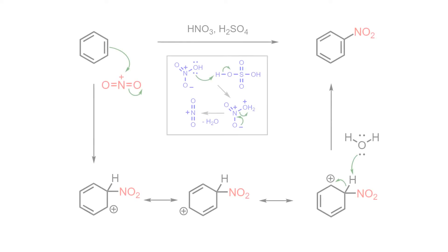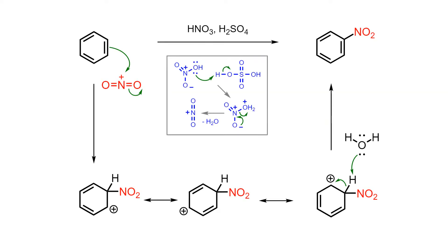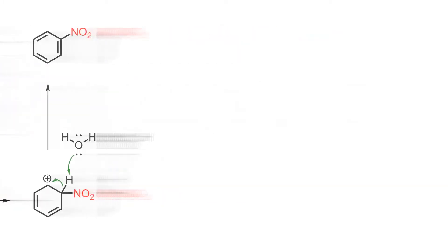The mechanism begins with nitric acid and sulfuric acid interacting to produce the highly electrophilic nitronium ion. This is then attacked by the benzene pi cloud to give a resonance-stabilized intermediate, which is no longer aromatic. In the last step, the sigma complex is deprotonated by water from the solvent to reform the aromatic sextet and provide nitrobenzene.